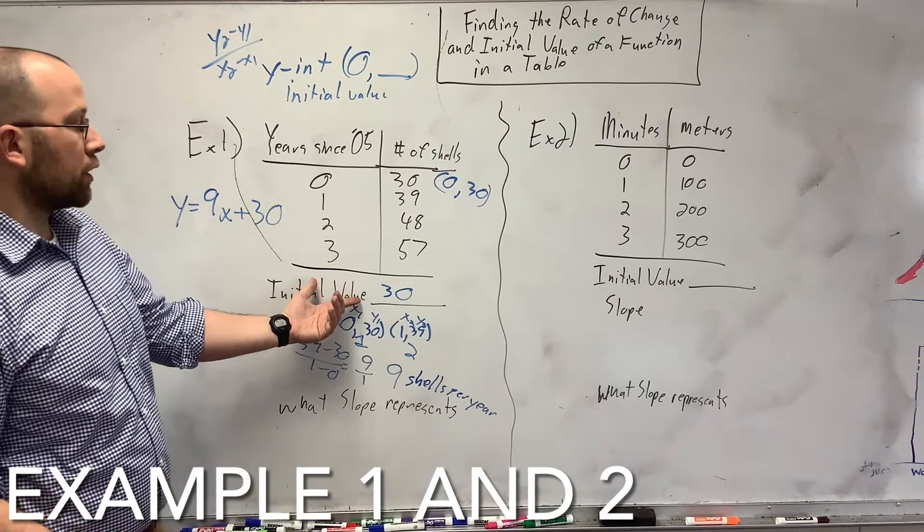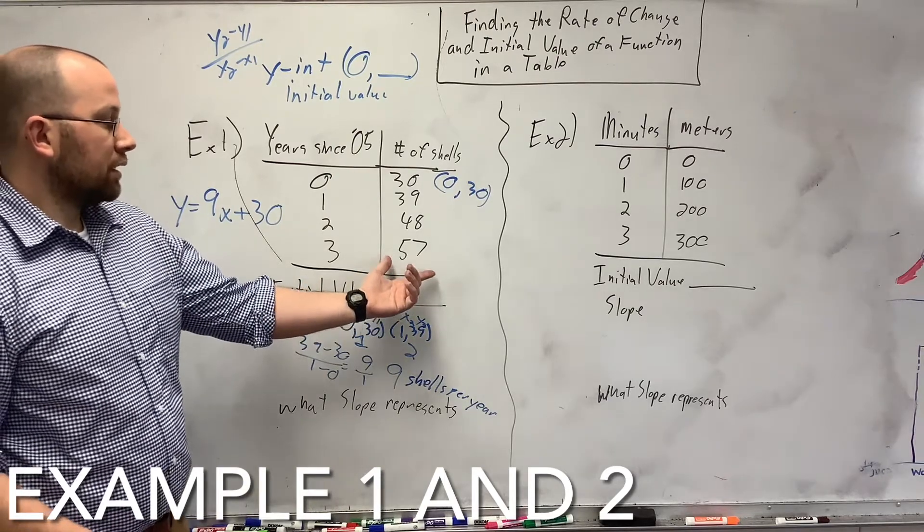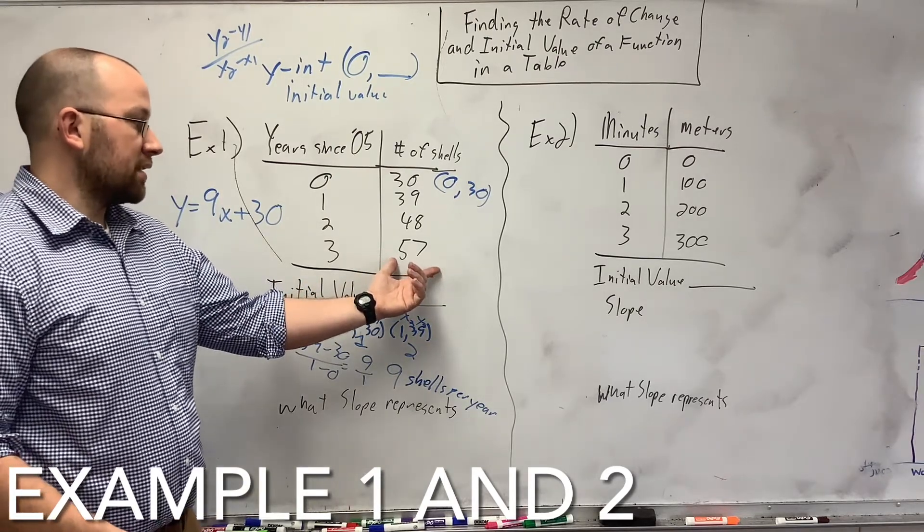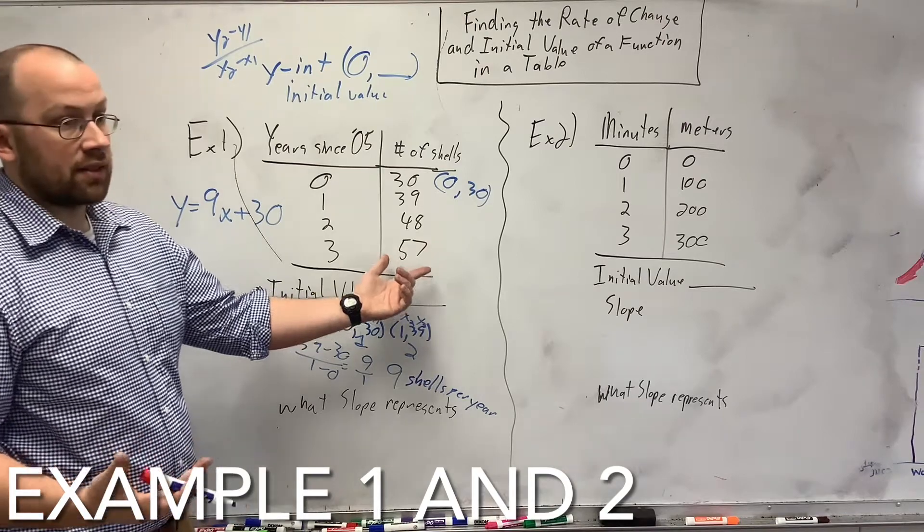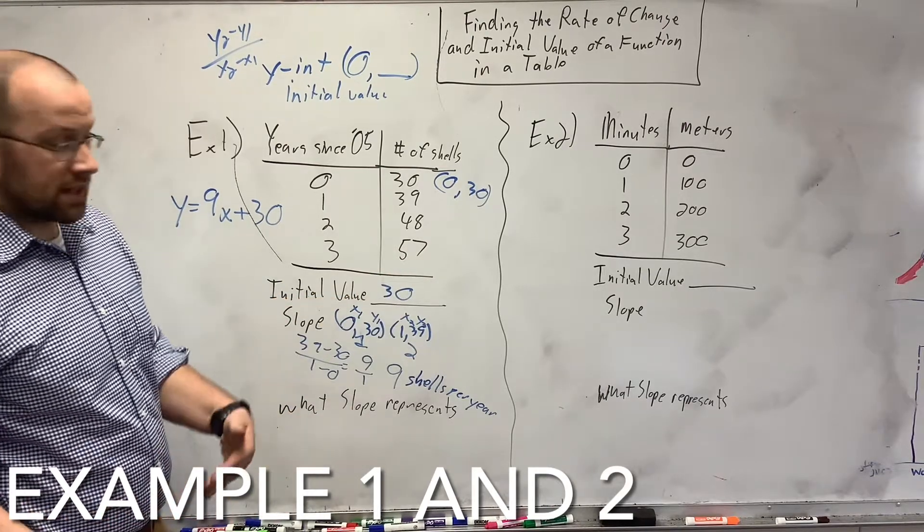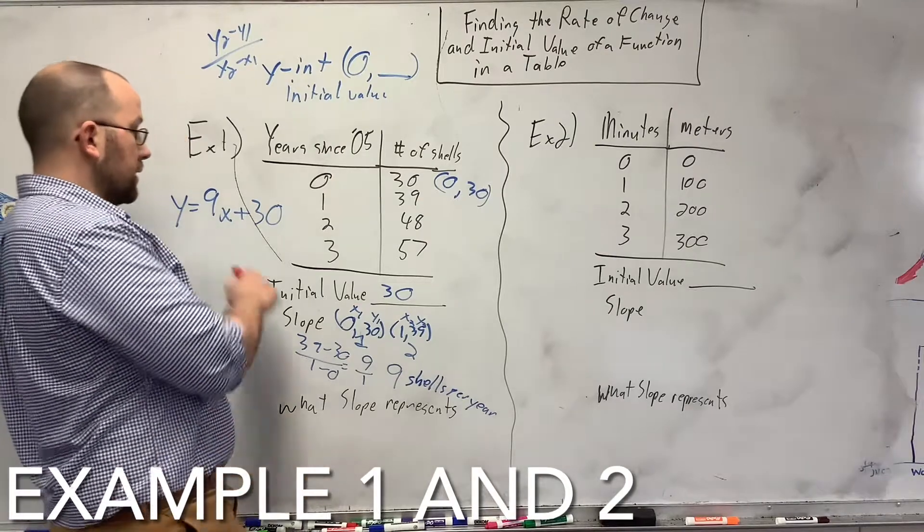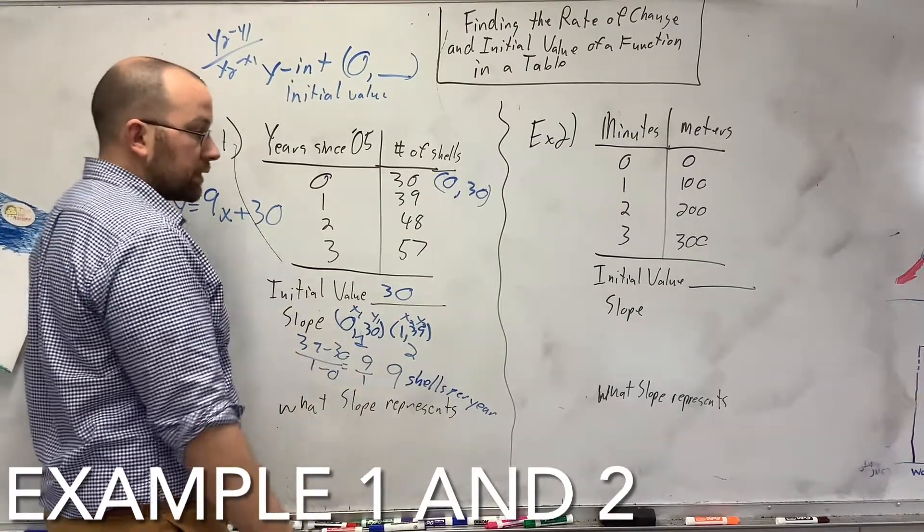She's getting 9 shells per year, started with 30 shells, and then you can tell. So, if you were saying, 4 years after 05, how many would you have? Well, you add 9 to this and you get 66. You add another 9 to it for the next year, you get 75 and so on. Here's your equation. That's what the slope represents.